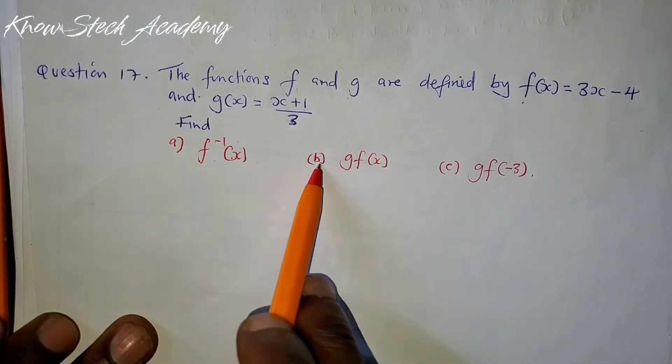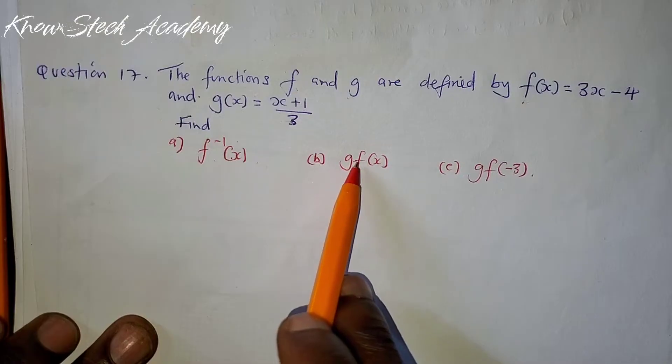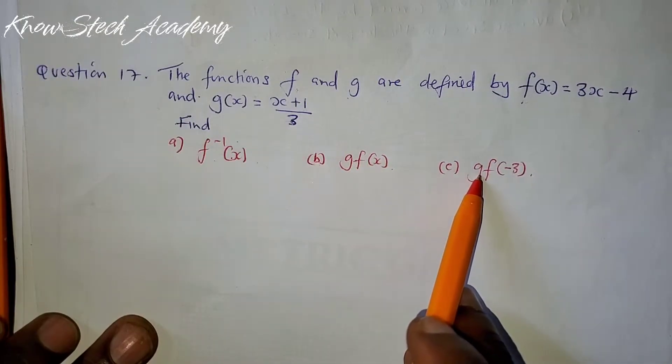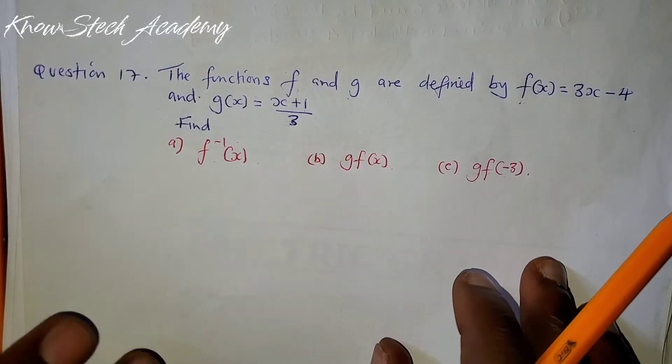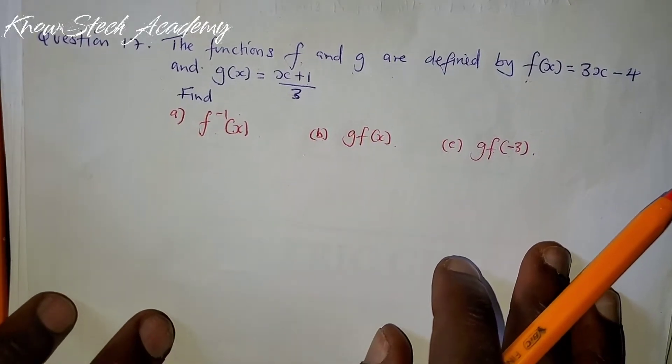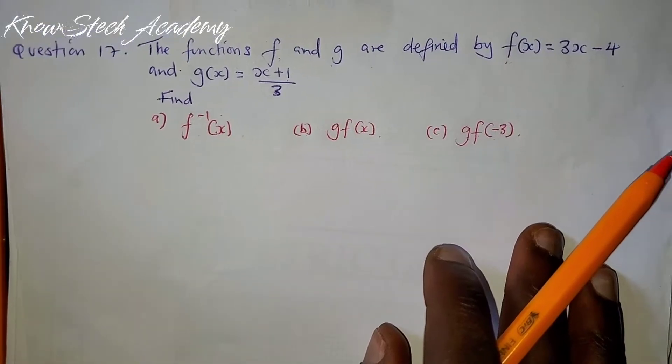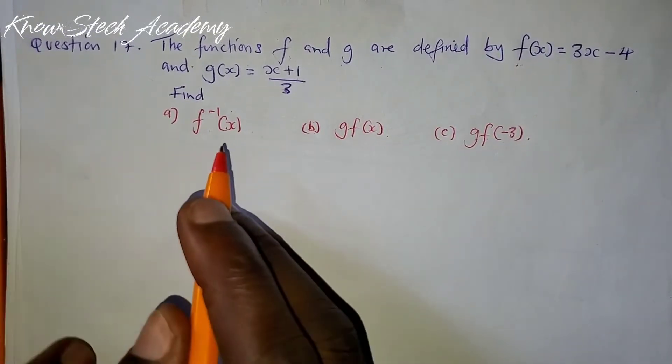A, find f inverse of x. B, find gf(x). C, find gf(-3). This is very simple. This is how you do it.